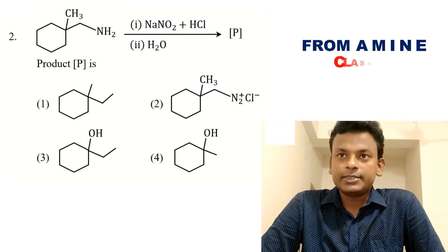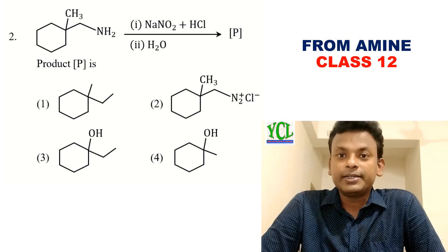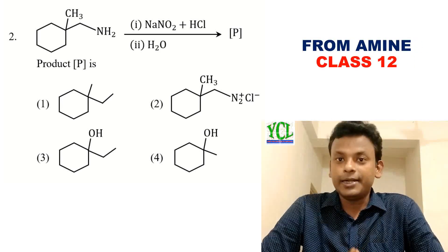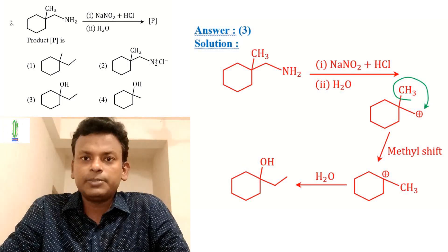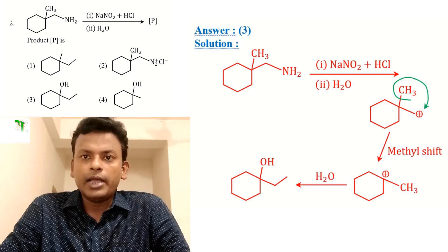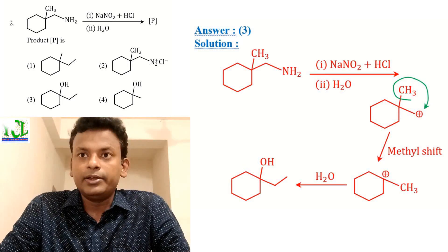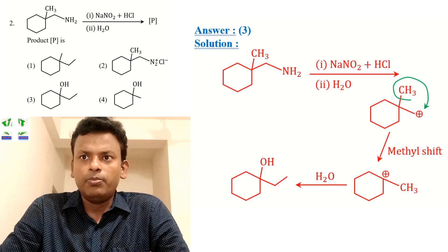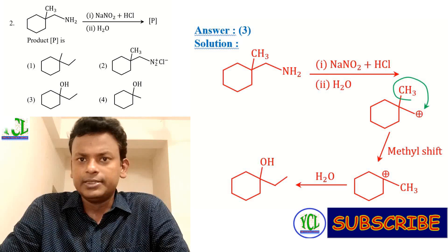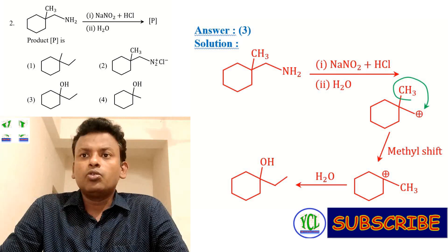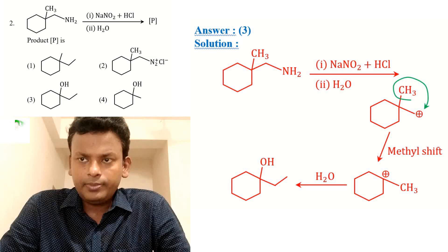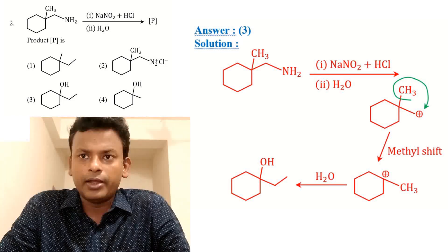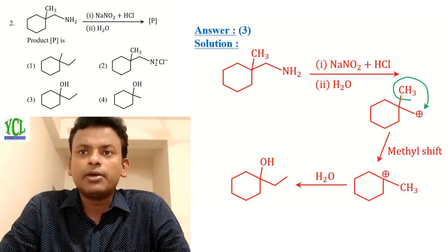For question 2, product P options are given and the answer is 3. First, a primary amine reacts with NaNO2/HCl to form a carbocation with nitrogen given out. Then a 1,2-methyl shift occurs from a tertiary carbocation, and hydrolysis gives the product.